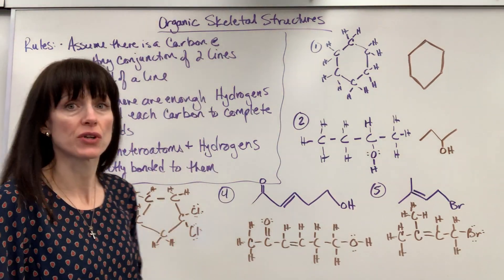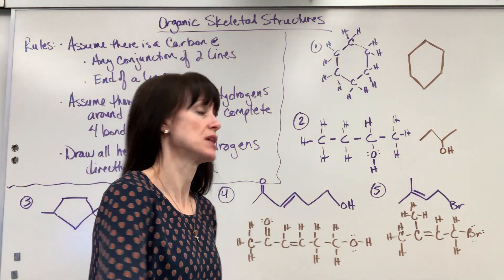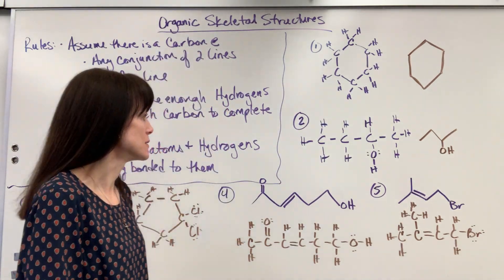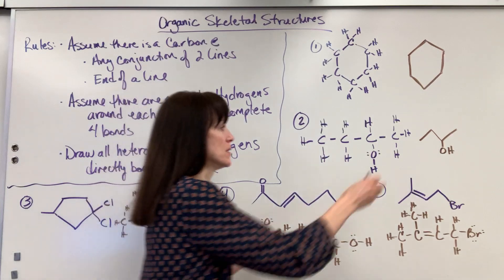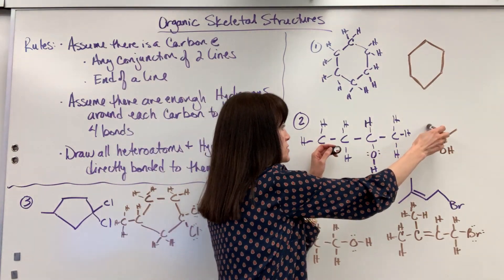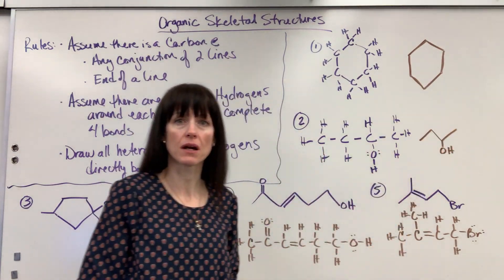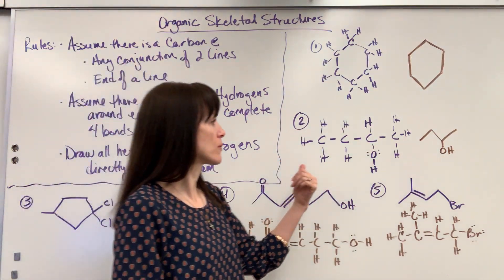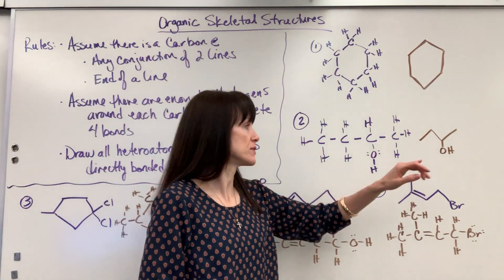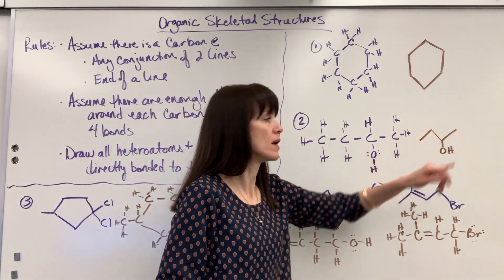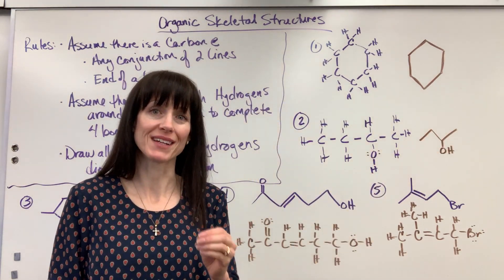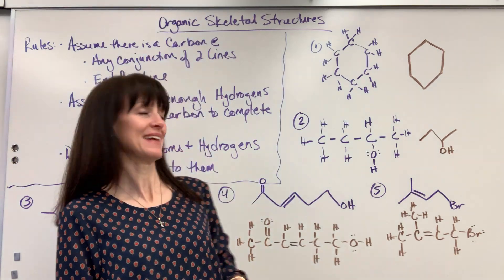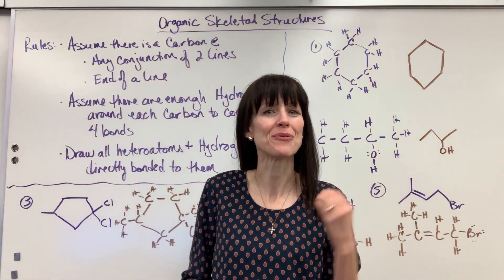So there you have skeletal structures. I like skeletal structures — it makes drawing really fast. I simply look at my carbons, put my pencil down, and start doing the conjunctions to represent the carbons, then add in what I have to. Going backwards, I carefully count the number of bonds the carbon has based on conjunctions, and then add the hydrogens back in. So proud of you — have a wonderful day!